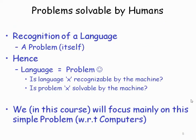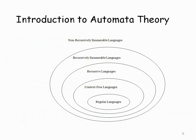Recognition of a language is the problem itself. To recognize a language, you must first know its alphabets — otherwise it is very difficult. Language equals problem. Is language X recognized by the machine? Is problem X solved by the machine? These are the questions that need to be posed. We will focus mainly on this simple problem with respect to computers. This is called the Chomsky hierarchy of grammars, or Chomsky hierarchy of languages.